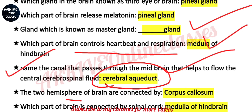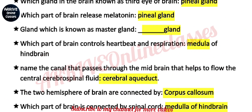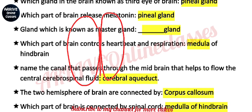NCRT-based and previous year question: the brain has two hemispheres. If you look at the brain from above, you can see two hemispheres. The connection between these two hemispheres is called the corpus callosum.